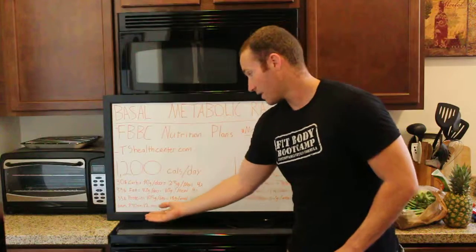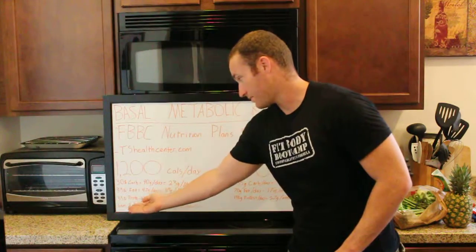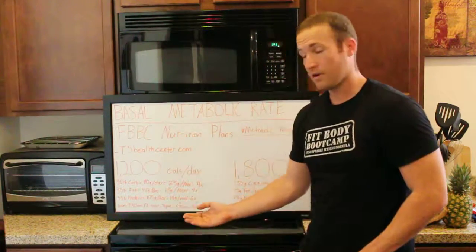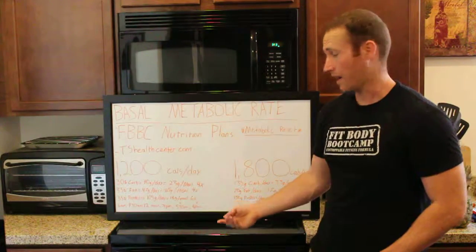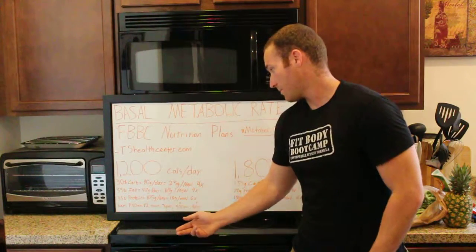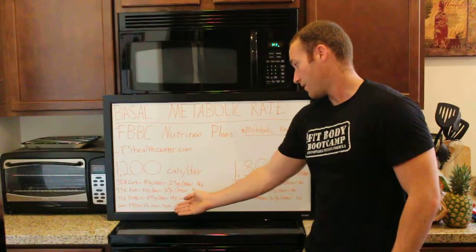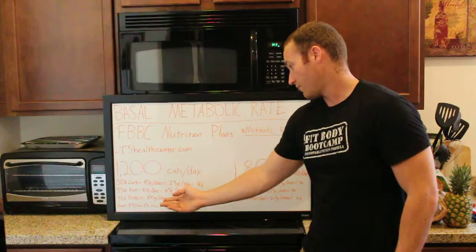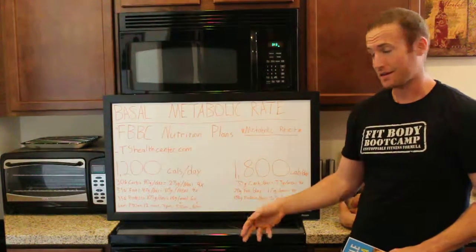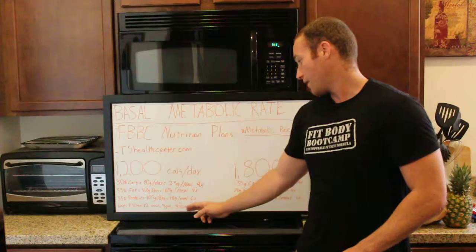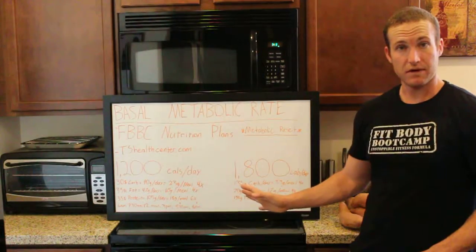Here's how this would look using the 1,200-calorie example: at 6 a.m. you would have meal 1 — protein, carbs, and fat. Meal 2 at 9:30 a.m., meal 3 at noon. Then meal 4 at 3 p.m., which would be your last carbohydrate and fat-containing meal. Then at 5:30 p.m. and 8 p.m. you would have protein and veggies.